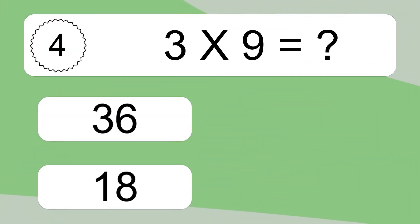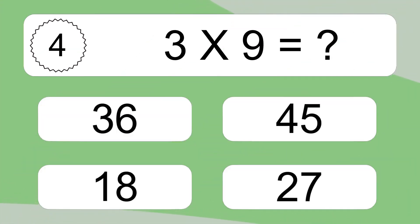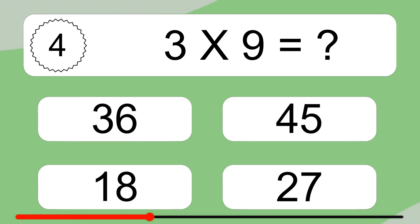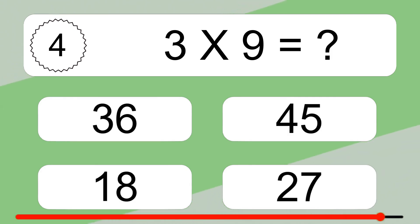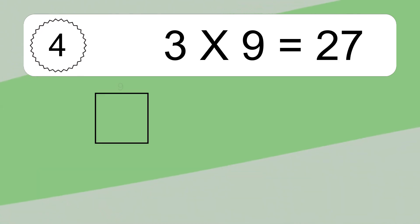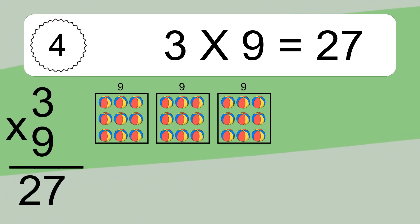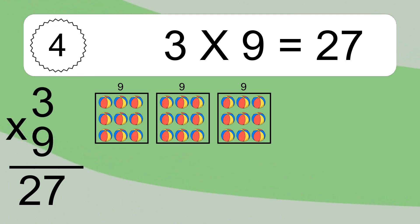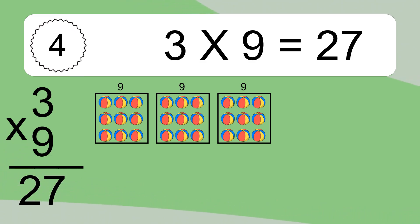3 times 9 equals what? We have 3 boxes, and each box has 9 colorful balls inside. If you count all the balls in all the boxes together, you will have 3 times 9 balls. This equals 27 balls.